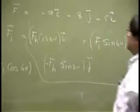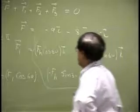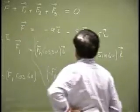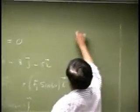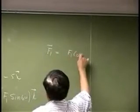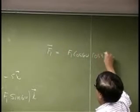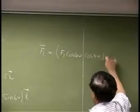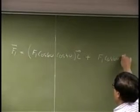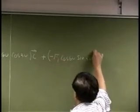So that is what we get as the first force. If I put everything together, then F1 equals F1 cosine 60 cosine 30 — that is the x component — times i. Then you have F1 cosine 60 sine 30 with a negative sign, times j.